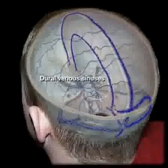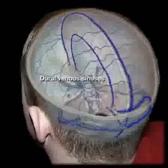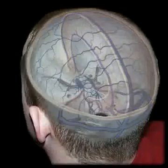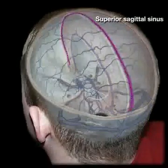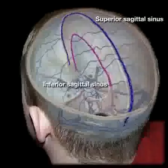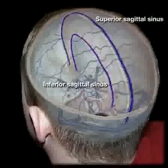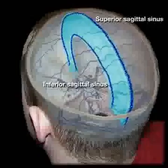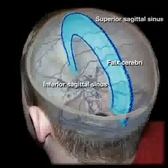Along the midline, two sinuses that receive venous blood from the brain and meninges are the superior sagittal sinus and inferior sagittal sinus. These lie in the superior and inferior margins of the dural fold known as falx cerebri.